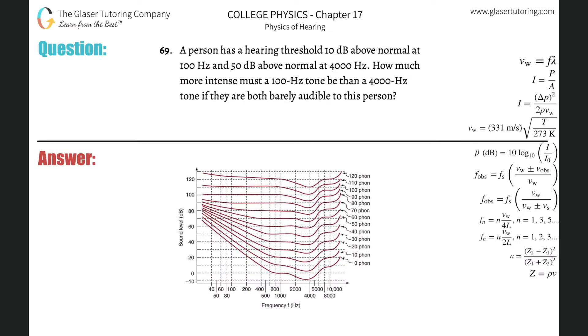Number 69. A person has a hearing threshold 10 decibels above normal at 100 hertz and 50 decibels above normal at 4,000 hertz. How much more intense must a 100 hertz tone be than a 4,000 hertz tone if they are barely audible?